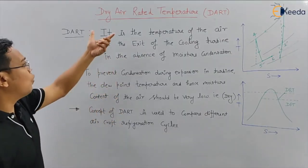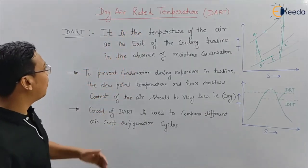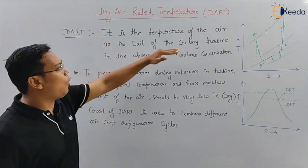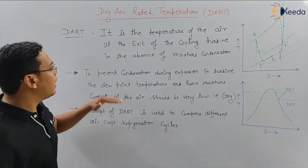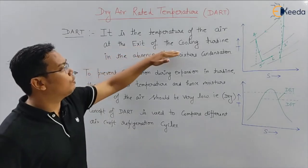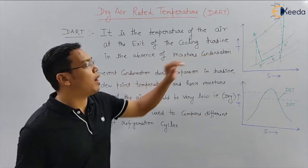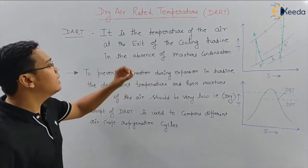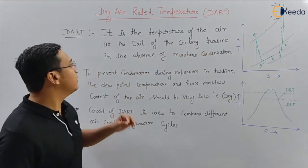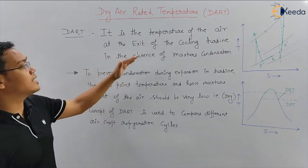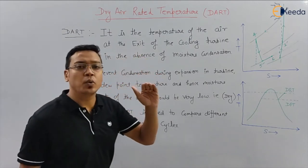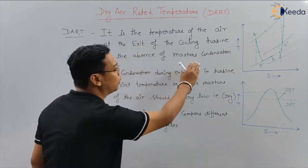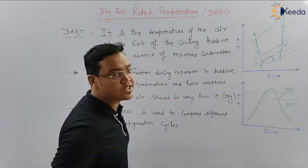The full form of DART is Dry Air Rated Temperature. It is the temperature of the air at the exit of the cooling turbine in the absence of moisture condensation.